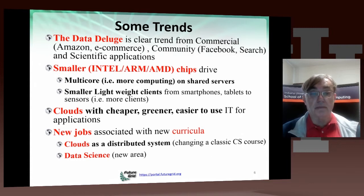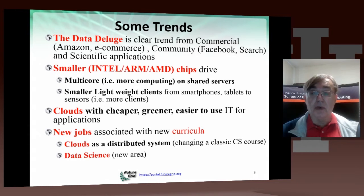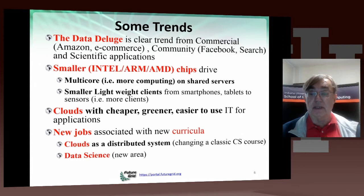This data deluge is partly exploiting and partly driving a continued rapid advance in chip technology. As chips use a smaller feature size, they can get more cores — more computers on a single chip. On the server side, you have a lot more computing in your cloud because of multicore chips. On the client side, smaller chips mean you can pack a lot of intelligence into smaller devices, driving the revolution with smartphones, tablets, and sensors as lighter-weight clients.